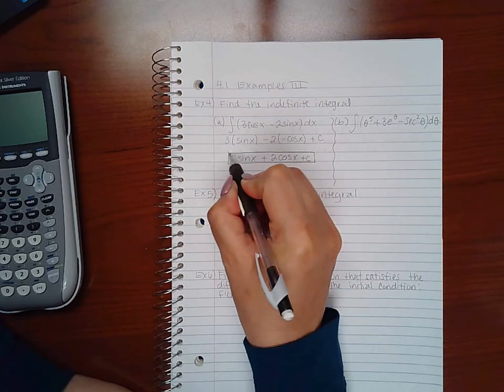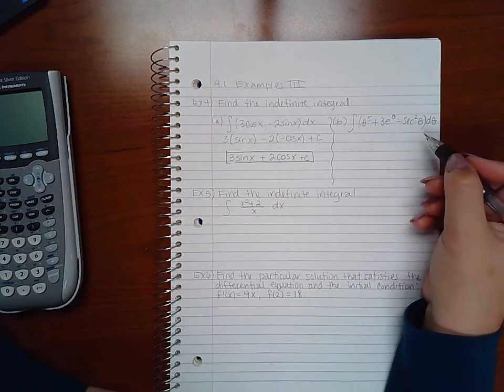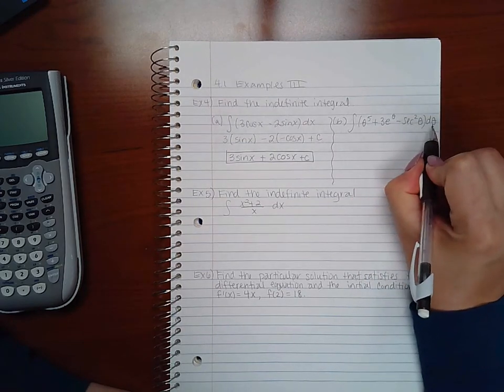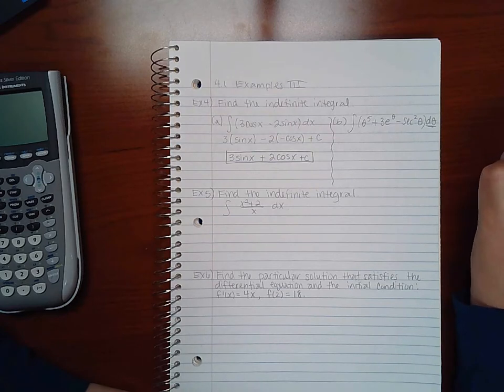Now part b, they're changing things up a little bit. Notice that my variables are thetas now, and here I am integrating with respect to theta. So just like we integrated with respect to y, it just means that instead of writing x's in our rules of integration, we write whatever variable they have.